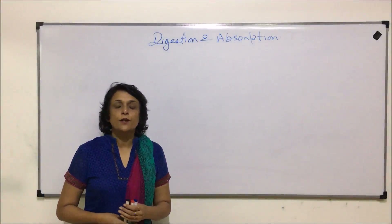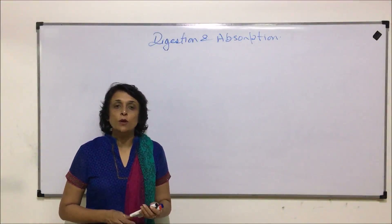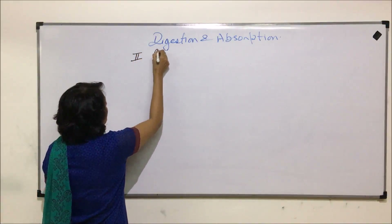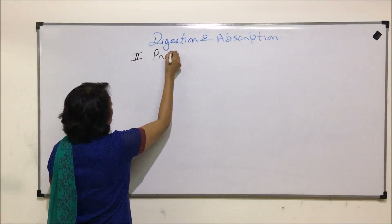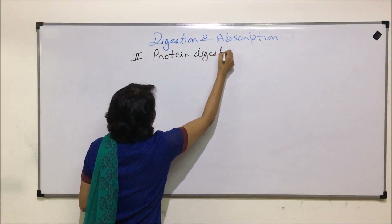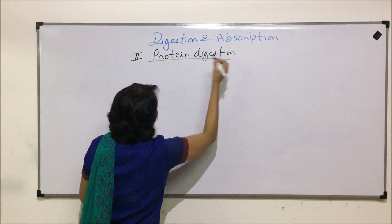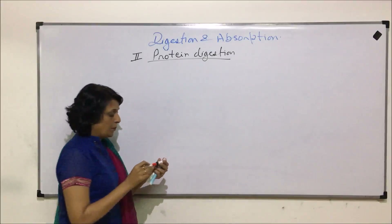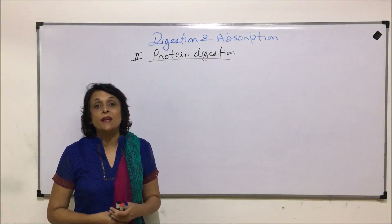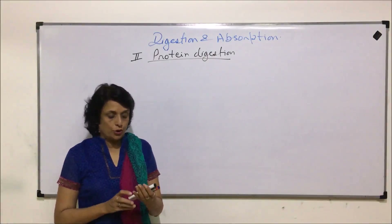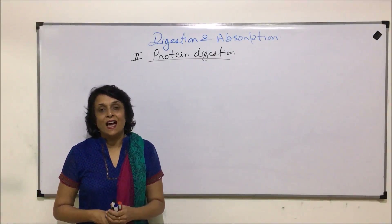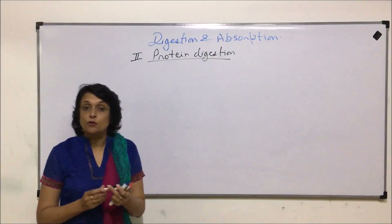In this video we'll talk about protein digestion. The proteins that we normally consume come from pulses or sprouts, or from eggs, meat, and other non-vegetarian food.